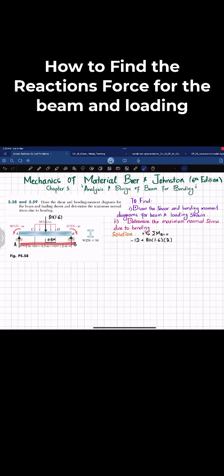So A times perpendicular distance of 4 meters, and this is clockwise so it's negative. I'll write minus A times 4. The last moment is 60 kilonewton-meter which is counterclockwise, so plus 60, and the sum equals zero.